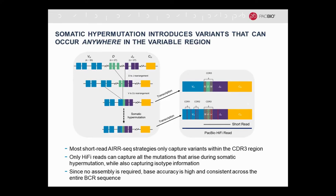Since no assembly is required, we're able to sequence the entire B-cell receptor in one read. The base accuracy is very high and consistent across the entire BCR sequence. With short-read strategies, assembly is required, and there's a region in the center where reads are joined that can have lower accuracy. In addition, B-cell receptors that are longer than average may not be able to be assembled at all and would be missing — which is significant because the most effective antibodies are often the ones that have undergone multiple rounds of activation and tend to be longer than average.